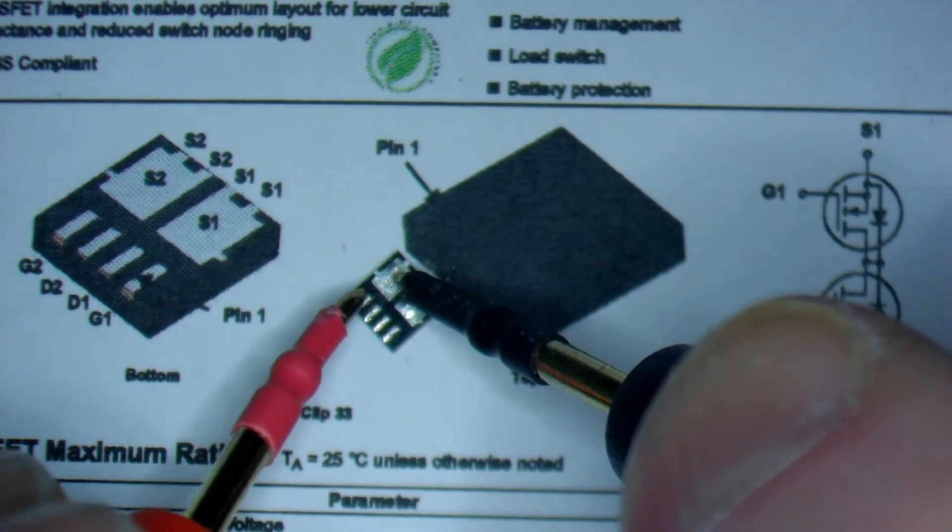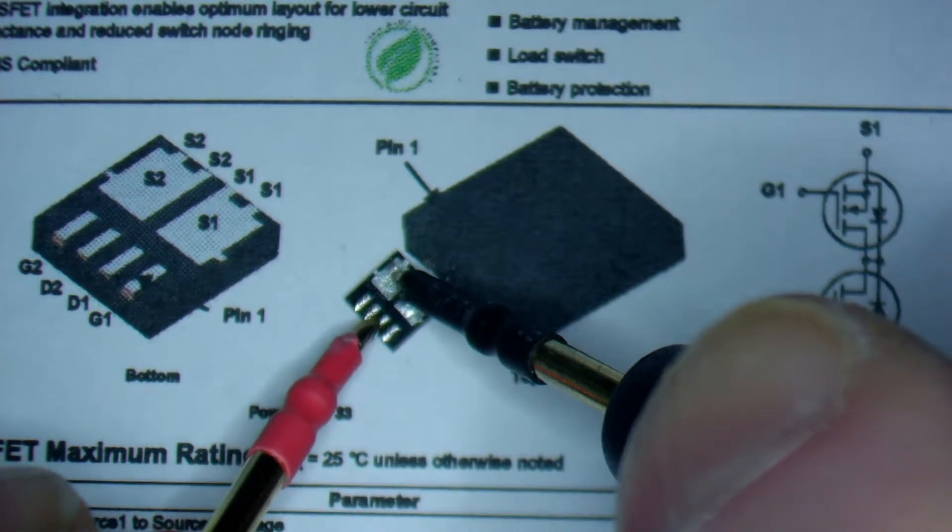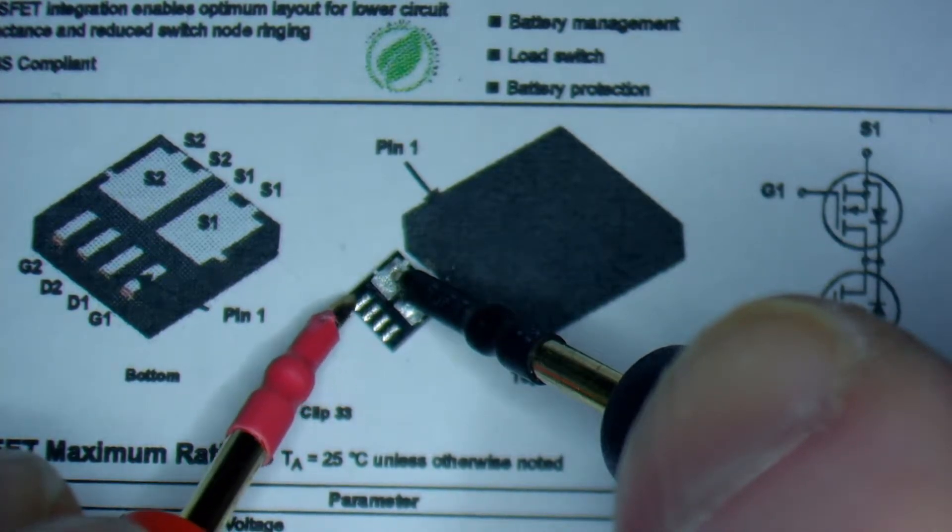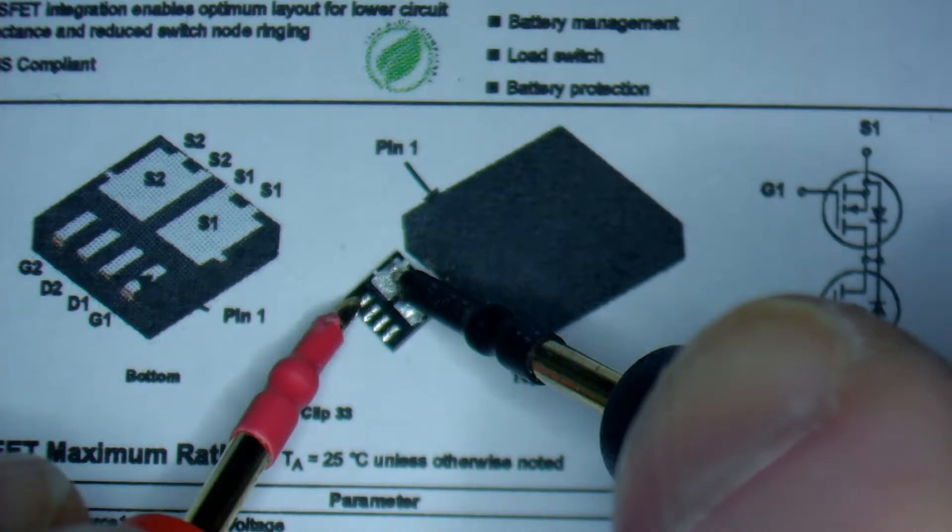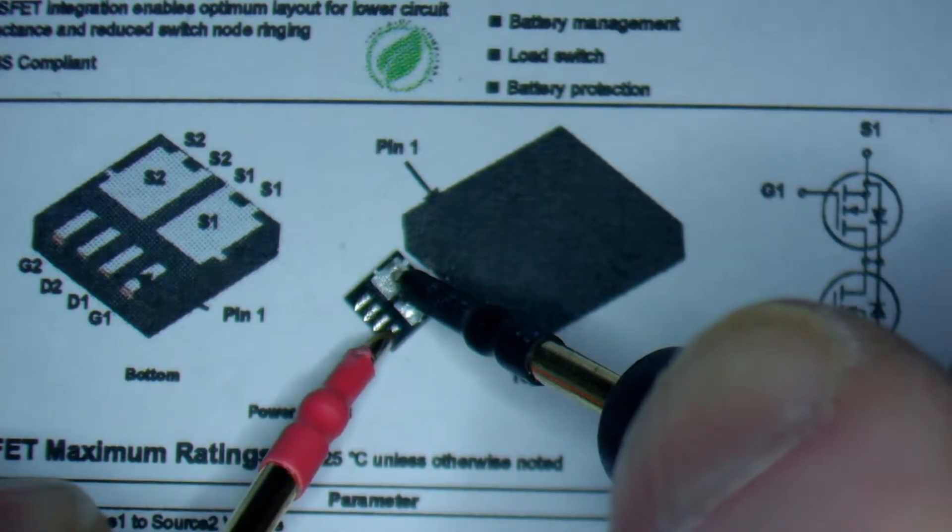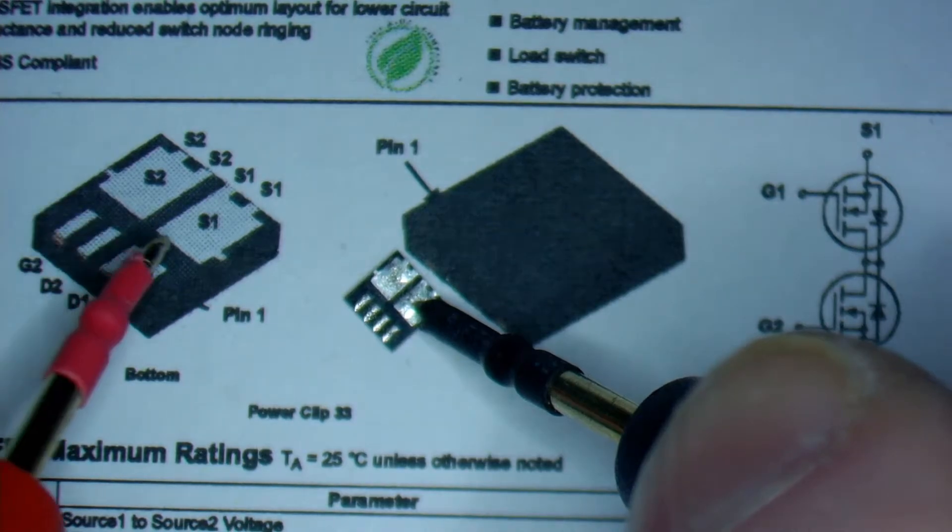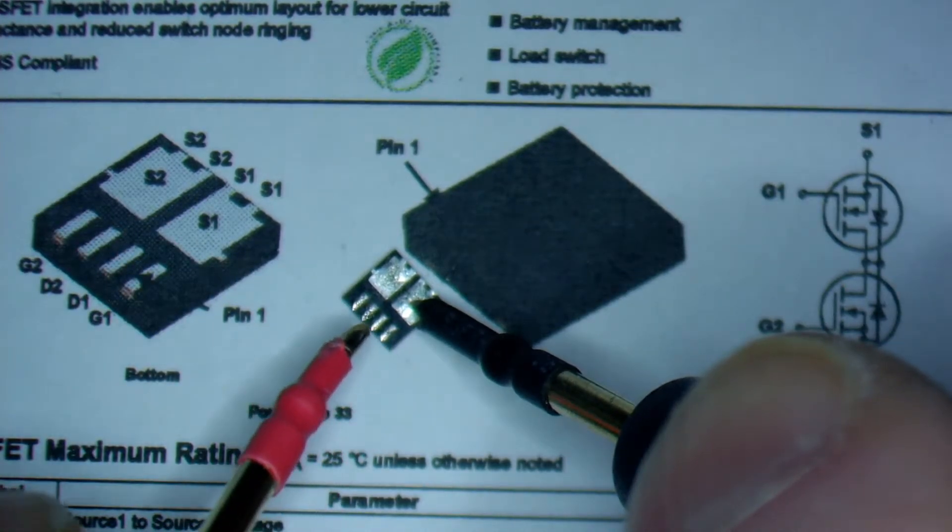I'll just show you the example. So I'm testing the MOSFETs, I'm just moving around and I see that the first pin, the gate 2, is open. The next one is shorted. The next one is open as well. I put it on the next one and the second source is shorted as well.